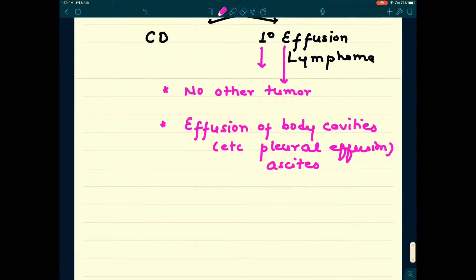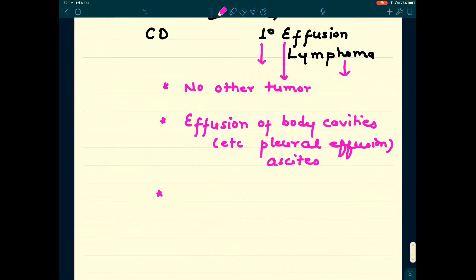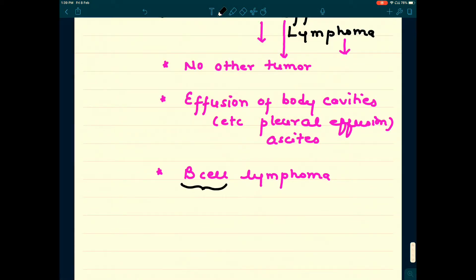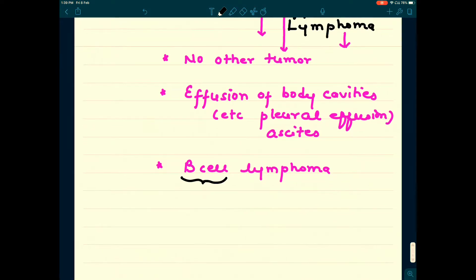On further evaluation, we have recognized that this effusion is actually lymphoma because effusion fluid contains malignant cells. And these malignant cells are positive for surface immunoglobulins. Surface immunoglobulin is a B cell marker.